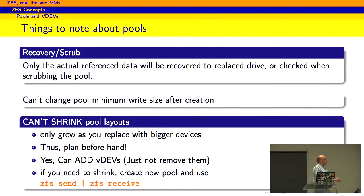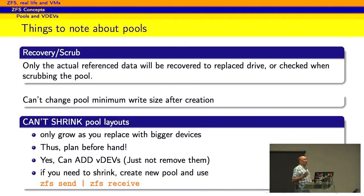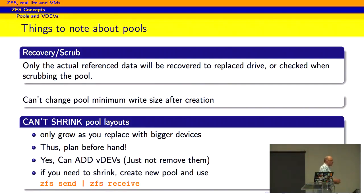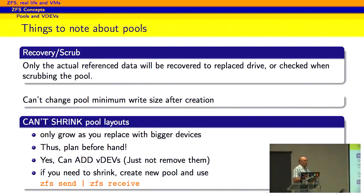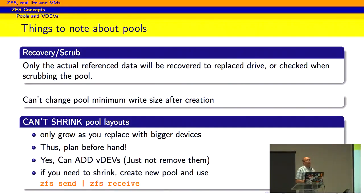One of the nicest things with ZFS is it keeps track of where data has been written and what data has been written. So when you do a recovery or a scrub of your pool, it will only scrub and recover actual data — it won't go after the rest of the stuff that's not being used. Since you can't change pool sizes or shrink them, you can only add devices. This forces you to sit down beforehand, decide what you want to do, where you want to go, and plan from there. It's also easier to start small with the optimal VDEV sizes and grow as you continue with your ZFS.